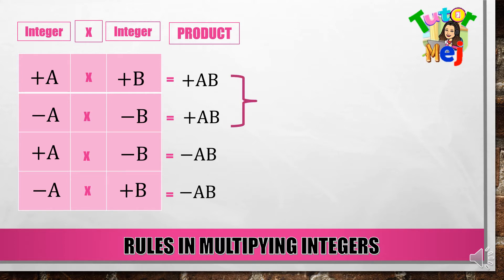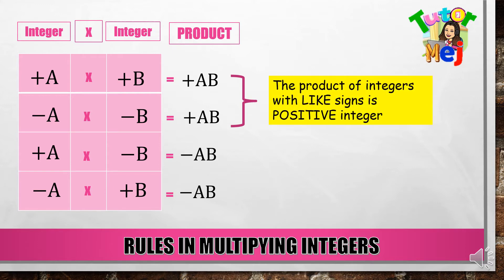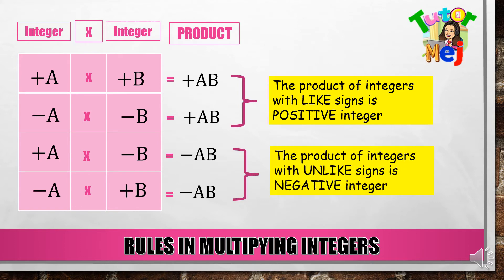So, in short: the product of integers with like signs is a positive integer. The product of integers with unlike signs is a negative integer.